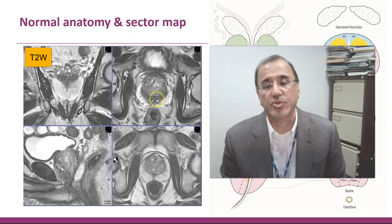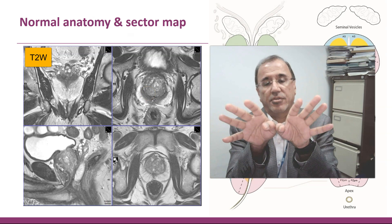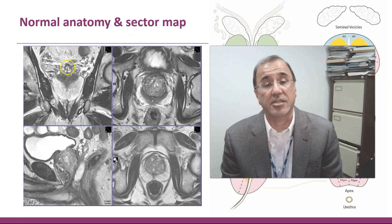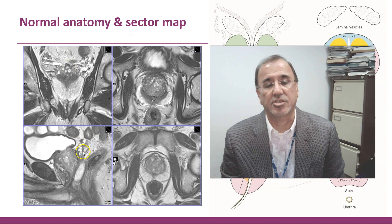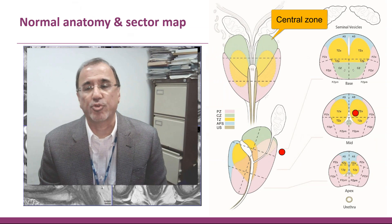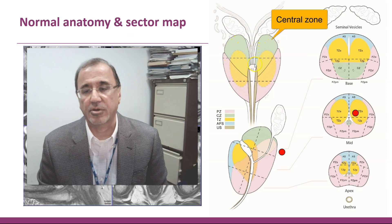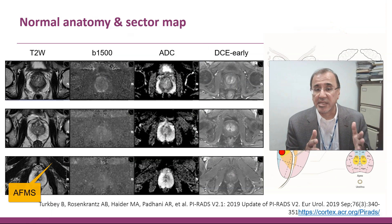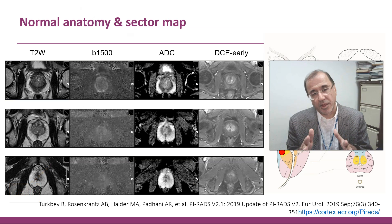The central zone sits behind and above the transition zone. The seminal vesicles and ejaculatory ducts are behind. These are the ejaculatory ducts here in the center, and then the seminal vesicles. The green in the stylized diagram is the central zone going caudally to a point. The peripheral zone, the anterior fibromuscular stroma anteriorly — tends to be thicker at the top than towards the apex of the gland.